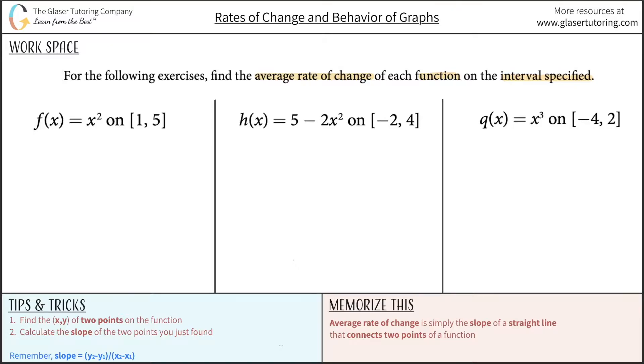First, this phrase average rate of change - you want to interpret this as a single word: slope. The average rate of change is simply the slope of a straight line that connects two points of a function.